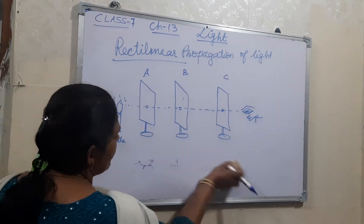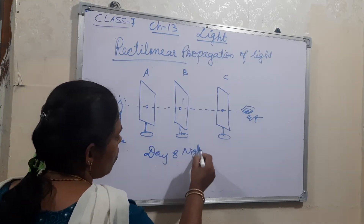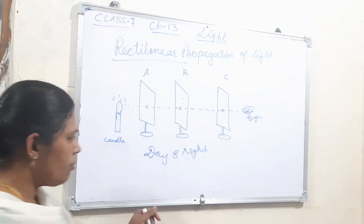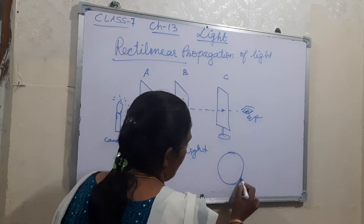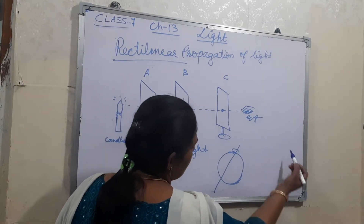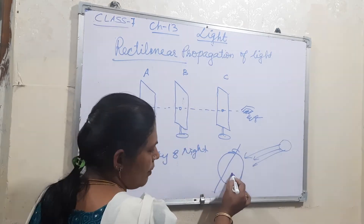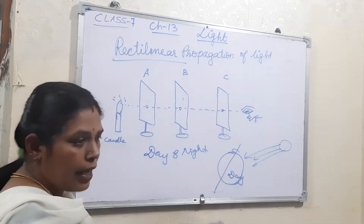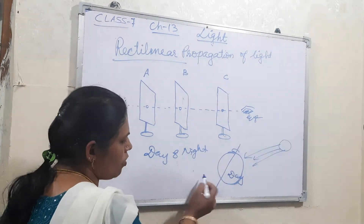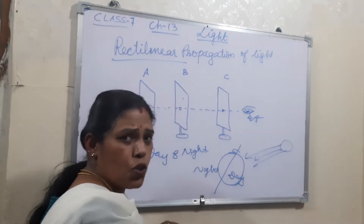Shadow is formed because of the straight line travel of this light, and the light is obstructed by the opaque body, which will not allow light to pass through. Day and night are also formed due to the rectilinear propagation of light. When the sun rays fall on one side of the earth, that side becomes day, while the other side is in shadow — that means night.